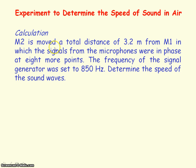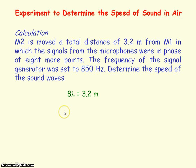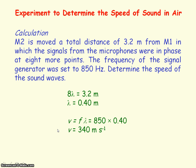If microphone M2 was moved a total distance of 3.2 meters from M1 and the signals were in phase eight more times during this movement, determine the speed of the sound waves if the frequency was 850 Hz. If the signals were in phase eight more times, that represents a distance of eight wavelengths. So eight wavelengths equals 3.2 meters, giving a wavelength of 0.40 meters. Using the wave speed equation V = Fλ and substituting the values, we get a wave speed of 340 meters per second.